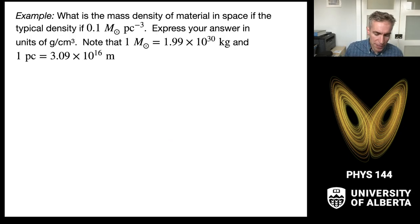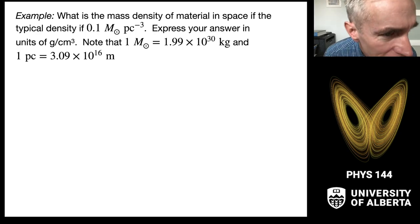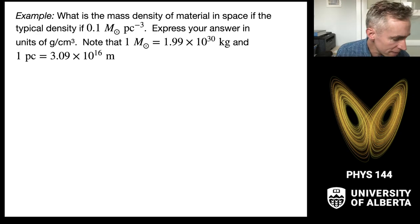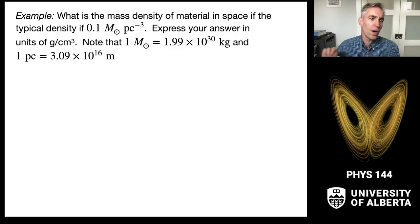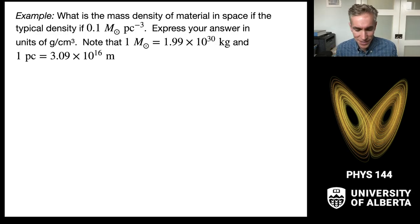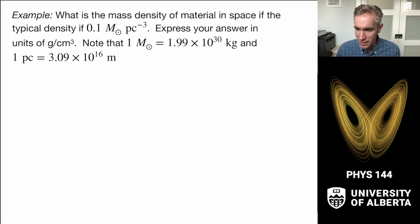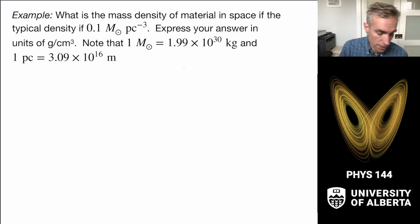A slightly more complicated example: as an astrophysicist, I'd like to know what the mass density of material in space is, if the typical density is 0.1 solar masses per cubic parsec. I'll tell you that a solar mass is 1.99 × 10³⁰ kilograms and a parsec is 3.09 × 10¹⁶ meters. These are glorious units for me, but maybe a little less obvious for you, so let's do this conversion.